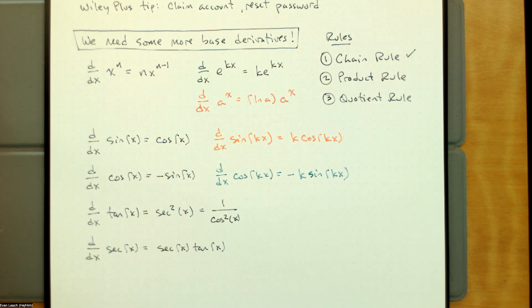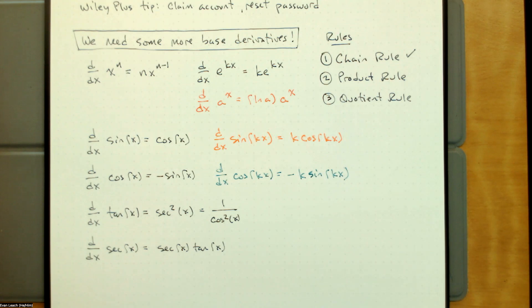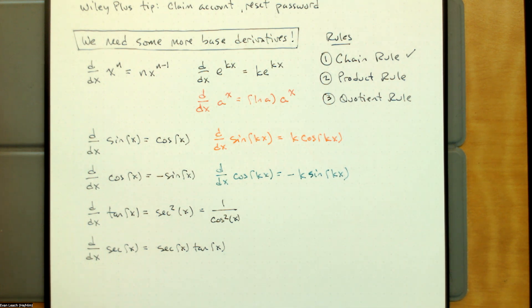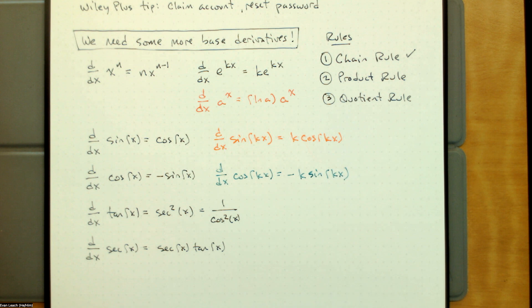We'll make them make sense later, but the most important thing is the TLDR: derivative of sine is cosine, derivative of cosine is negative sine, derivative of tangent is secant squared, derivative of secant is secant tangent. Deriving these requires knowing some weird limits, and it kind of becomes a circular argument, so I just cut out the middleman.